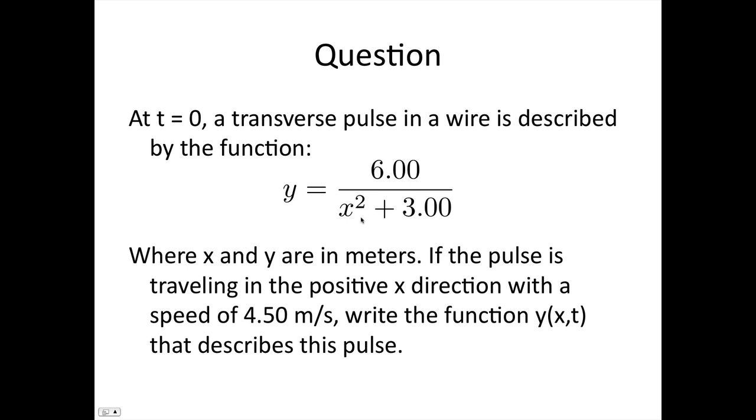y is equal to 6 over x squared plus 3, where x and y are in meters. If the pulse is traveling in the positive x direction with a speed of 4.50 meters per second, write the function y of x and t that describes this pulse.